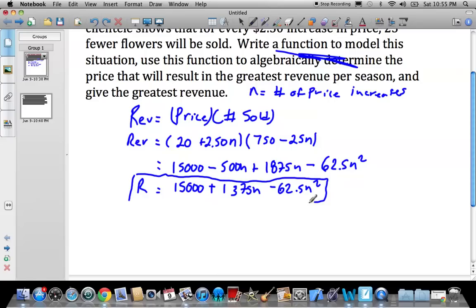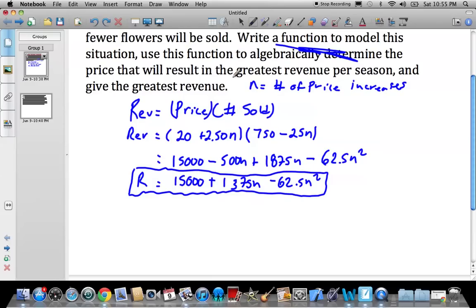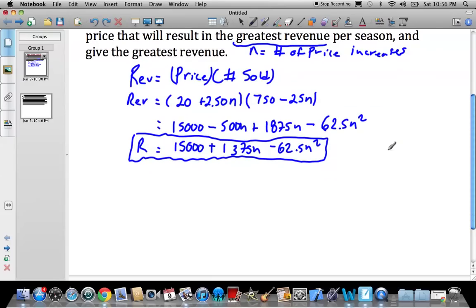This gives me the revenue for any type of price increase. So recognize now that it's asking us for the greatest price increase. So when we think greatest for a quadratic, we think vertex. Max, greatest, vertex. So when we think vertex, we think axis of symmetry.